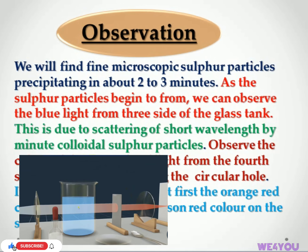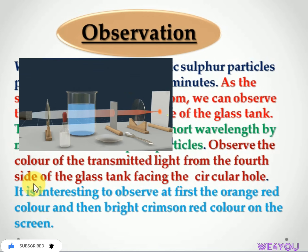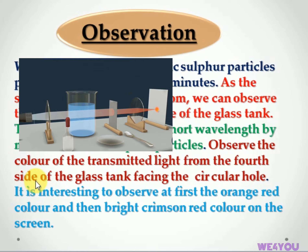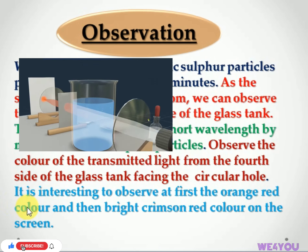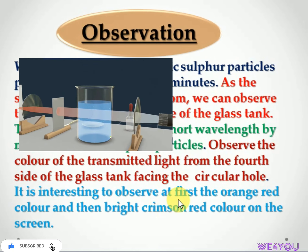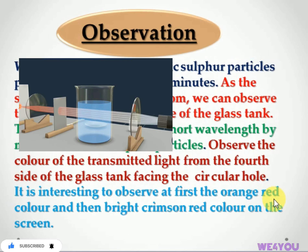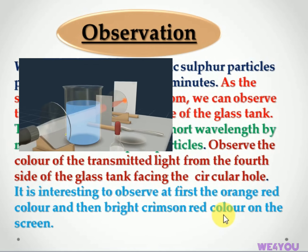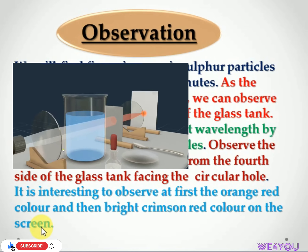Observe the color of the transmitted light from the fourth side of the glass tank facing the circular hole. It is interesting to observe that at first an orange, then orange-red color appears on the screen, and finally a bright crimson red color is seen.